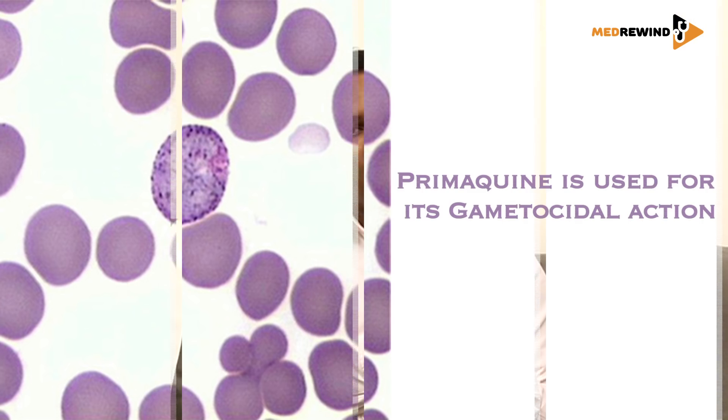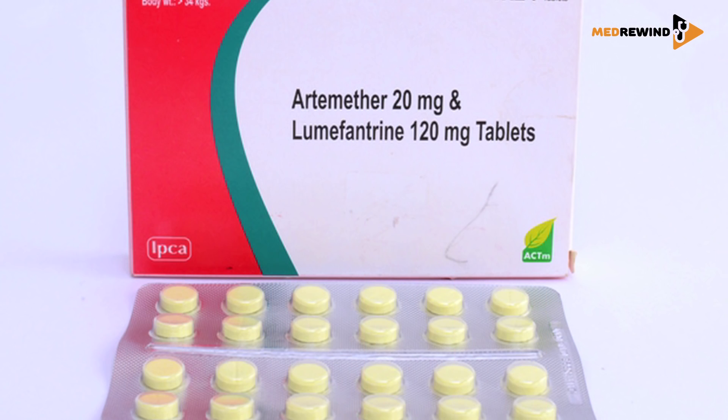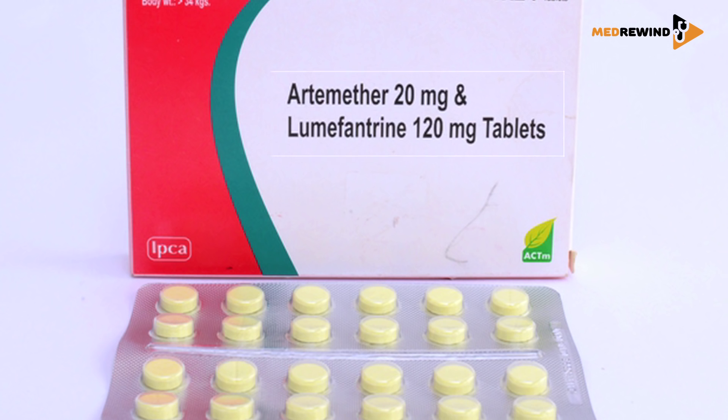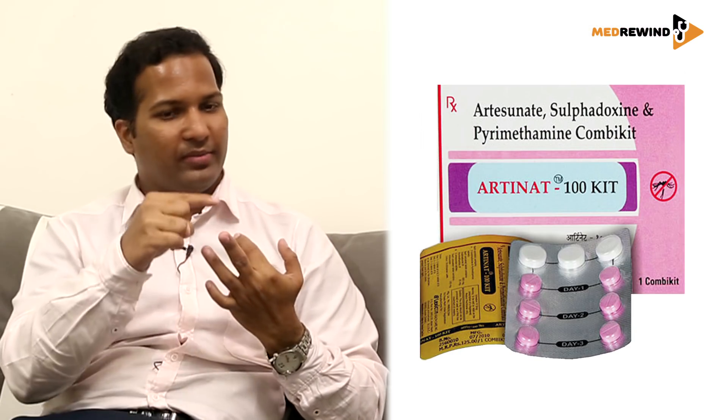The third drug is a single dose of primaquine given on day two. This primaquine is not for radical treatment of falciparum — it is given for its gametocidal action. In the northeastern states, the combination used is artemether-lumefantrine, again with a single dose of primaquine. So: non-northeastern states use artesunate + sulfadoxine-pyrimethamine + primaquine; northeastern states use artemether-lumefantrine + primaquine.